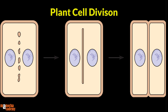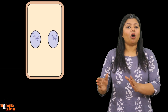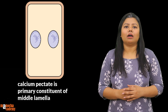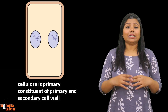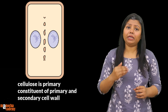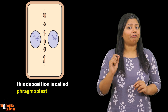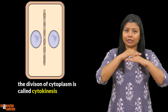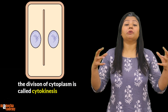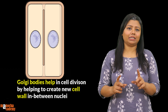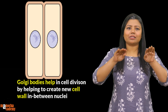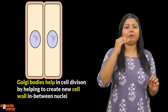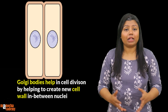In plants, during cell division, when the cell wall needs to be formed, cellulose or calcium pectate — the primary constituent of the middle lamella — and cellulose, the primary constituent of the primary and secondary cell wall, are deposited between the two daughter nuclei. This deposition is called the phragmoplast and it marks the start of cytokinesis. The Golgi bodies in the plant cell bring the essential constituents and deposit them between the two nuclei so that a fresh cell wall can form, thus helping in cell division.